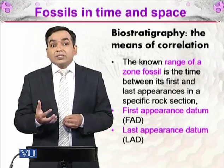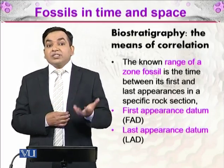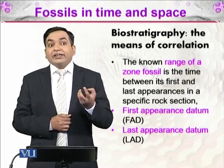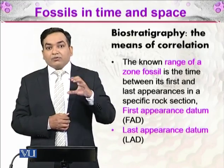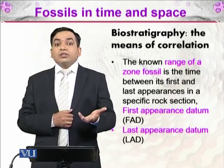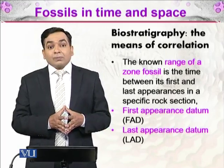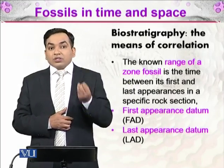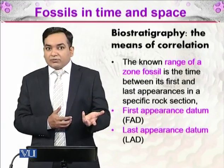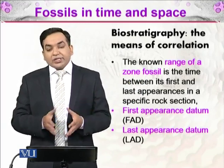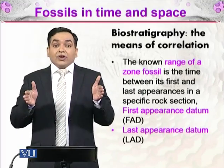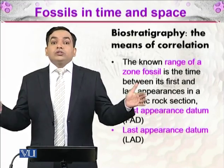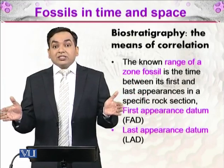We refer specifically to first appearance datum (FAD) and last appearance datum (LAD). 'Datum' is the singular of data and refers to a point identified in a layer where a fossil first or last appears. We cannot be certain whether that organism existed before the FAD, since the fossil of the very first individual may not necessarily be preserved. The same limitation applies to the LAD. Therefore, the range of a zone fossil is always smaller than the actual time that organism existed.